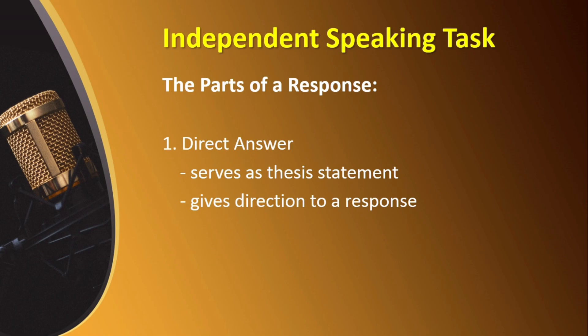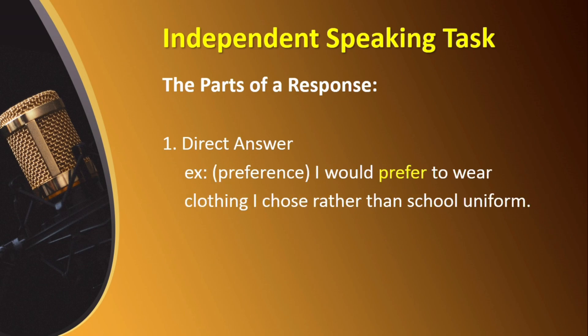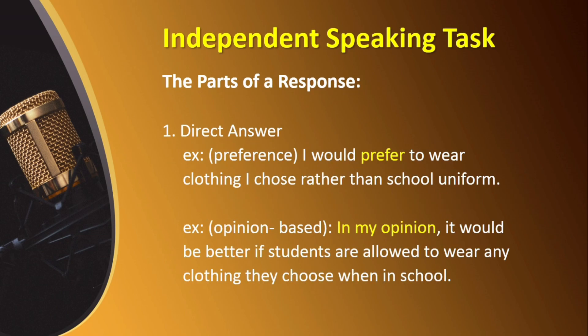We have two main types of independent questions, and this is where they are most useful. If you are answering a preference question — for example, do you prefer to wear school uniform in school or any clothing that you choose to wear? — then it would be best to directly answer it like this: 'I would prefer to wear clothing I chose rather than school uniform.' If the question requires your opinion and asks 'Should students wear school uniforms when in school?', then start your response with a sentence like 'In my opinion, it would be better if students are allowed to wear any clothing they choose when in school.' Remember you are only allowed to speak for 45 seconds, so a sentence that addresses the question directly is your best friend. It will save you time and allow your listener to have a better understanding of your choice.